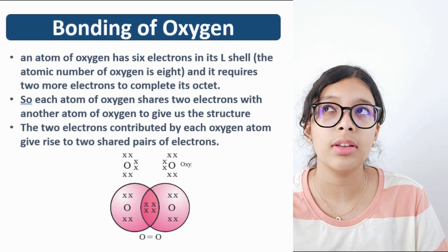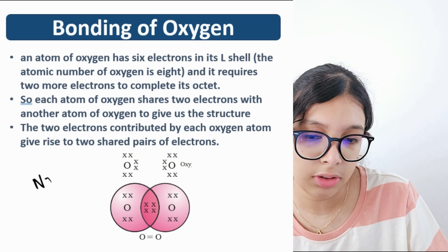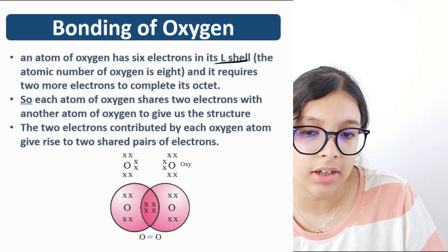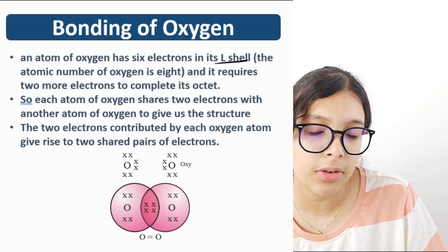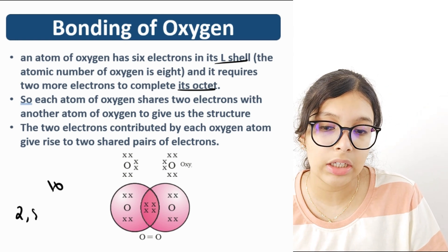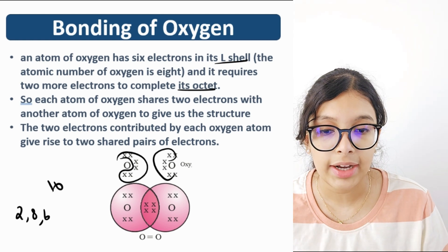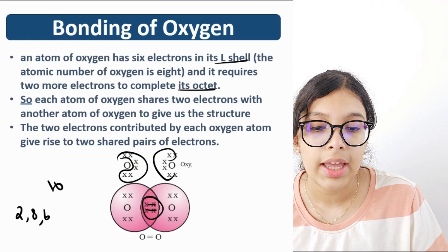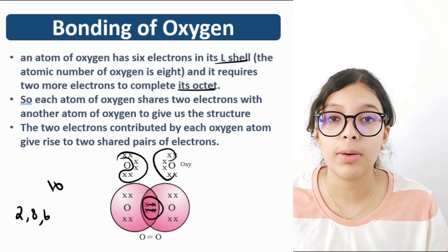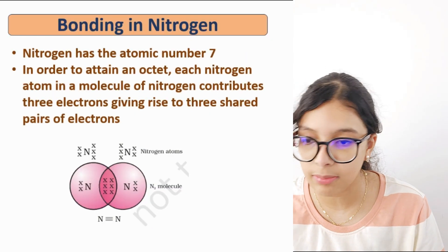For bonding in oxygen — an atom of oxygen has six electrons in its outermost shell. Oxygen's atomic number is 8, so the electronic configuration is 2, 6, and it requires two more electrons to complete the octet. Oxygen forms two bonds — two pairs of shared electrons — with another oxygen atom. There is also a lone pair on the oxygen. This is also sharing of electrons and hence covalent bonding.